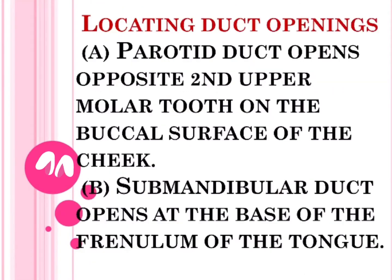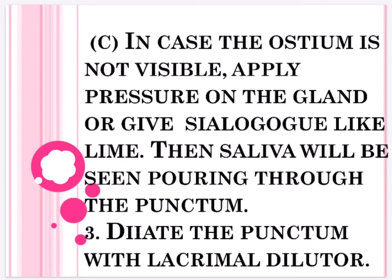Locating duct openings: a) The parotid duct opens opposite the second upper molar tooth on the buccal surface of the cheek. b) The submandibular duct opens at the base of the frenulum of the tongue. c) If the ostium is not visible, apply pressure on the gland or give a sialogogue like lime — saliva will then be seen pouring through the punctum.